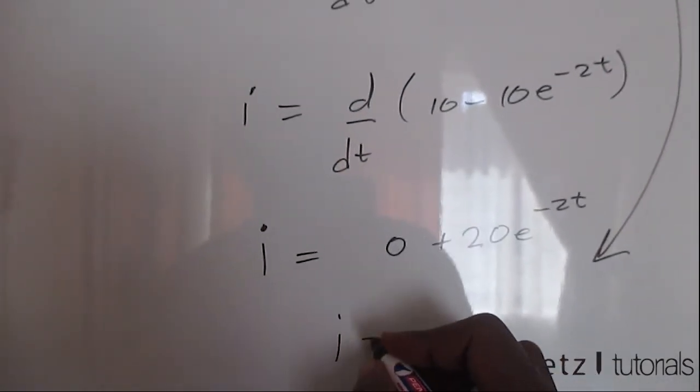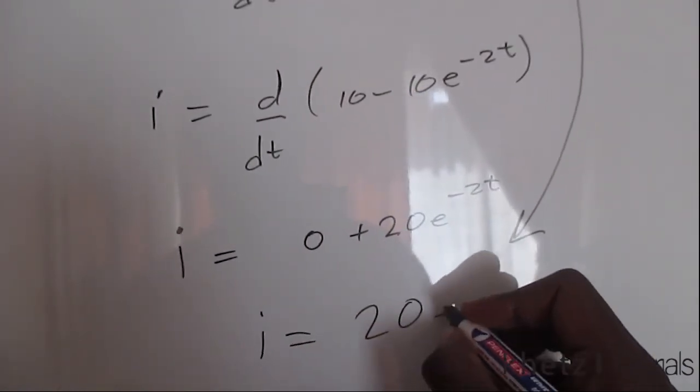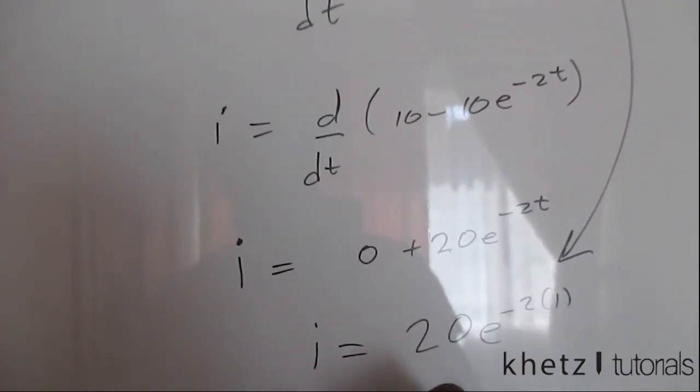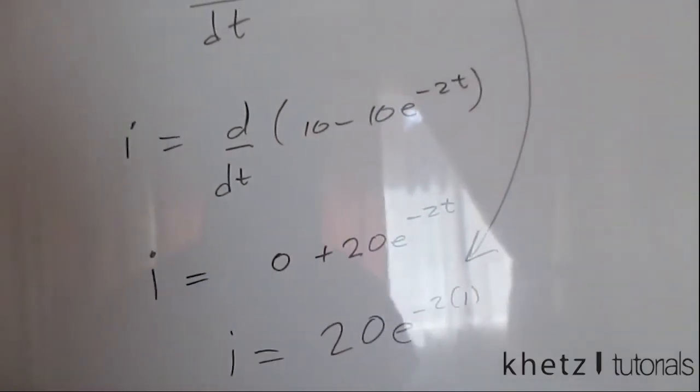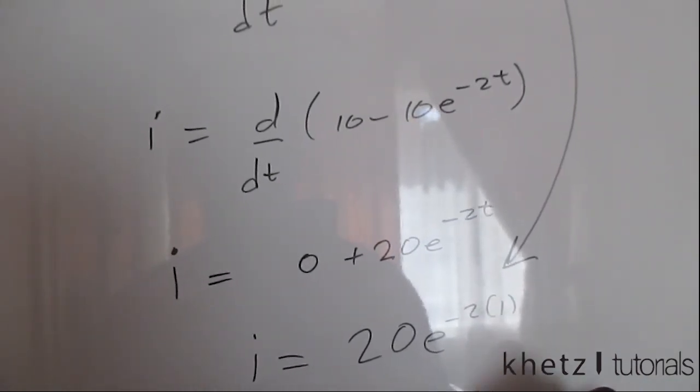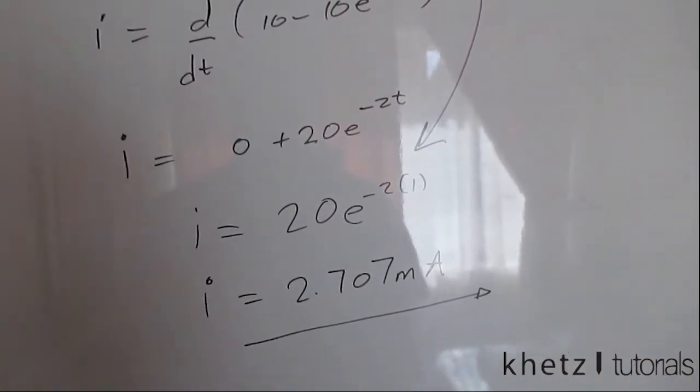Substituting the time given, which is t equals one second, you have 20e to the minus 2. Substitute one into there, and if you put this into your calculator, you should get 2.707 milliamperes. Put that into your calculator, and that is your answer.